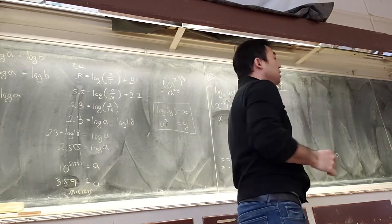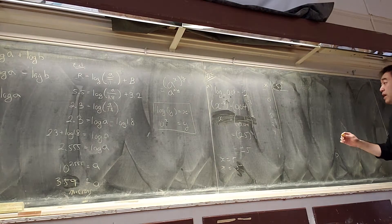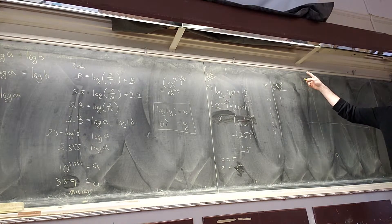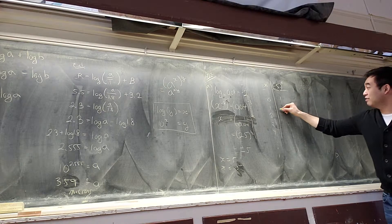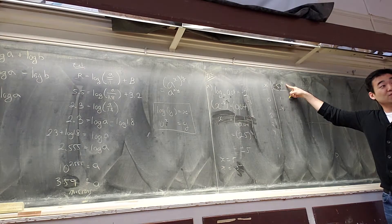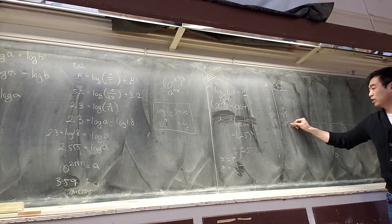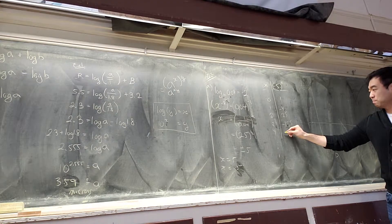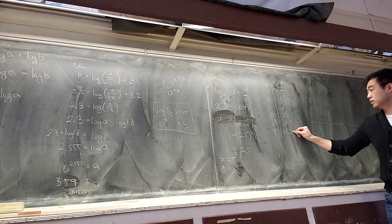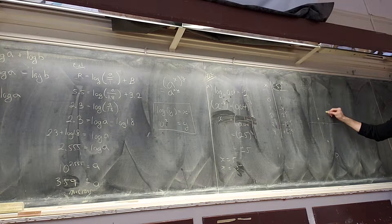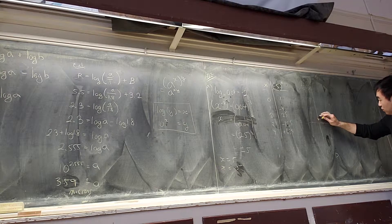When x equals 0, anything to the power of 0 is 1. If x is 1, we get negative 5. If x is 2, positive 25. Then negative 125. Then positive 625. Notice the values alternate between negative and positive.